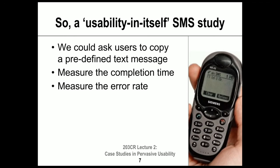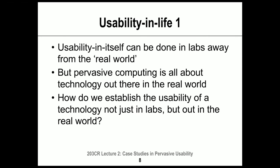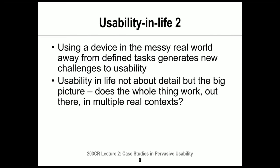To check out SMS for usability in itself, in a lab setting, we might ask users to copy a predefined text message and measure how long it takes and how many errors they make. But the thing about pervasive computing is it's inherently part of the real world and can't be separated from it. So how do we establish the usability of a technology not just in artificial lab situations but out in the real world?